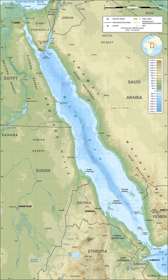The Red Sea is a global 200 ecoregion. The sea is underlain by the Red Sea Rift, which is part of the Great Rift Valley. The Red Sea has a surface area of roughly 438,000 km², is about 2,250 km long and, at its widest point, 355 km wide. It has a maximum depth of 3,040 m in the central trough, and an average depth of 490 m. However, there are also extensive shallow shelves, noted for their marine life and corals.